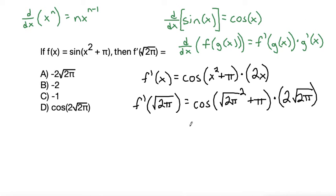Okay, from here we need to simplify. The square root will cancel out with the square. So that would be 2 pi plus pi, so that simplifies to cosine of 3 pi times 2 root 2 pi.